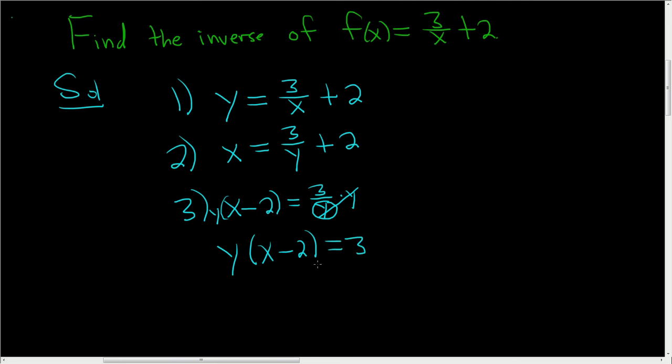At this point, you need to stop and think. We're looking for y. The only thing you have to do now is just divide by x minus 2. So divide both sides by x minus 2. And then y is equal to 3 over x minus 2.